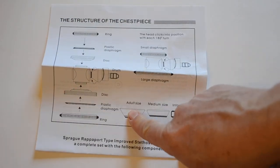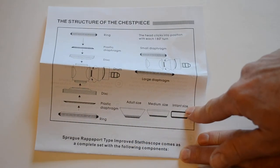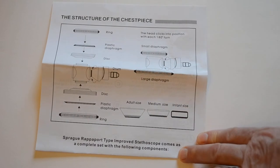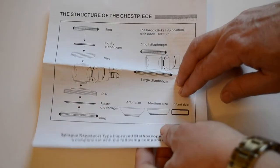This shows you how to turn it from an adult size into a medium size down to an infant size and the basic components that can be put in place to make that change.